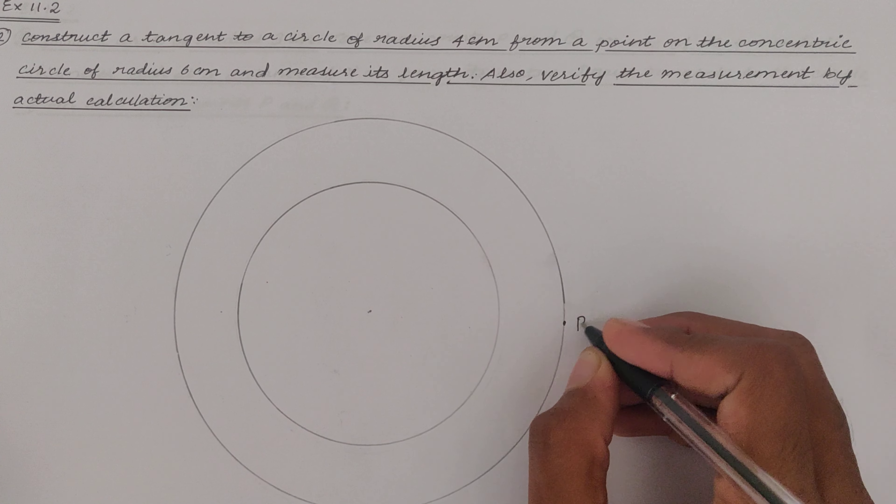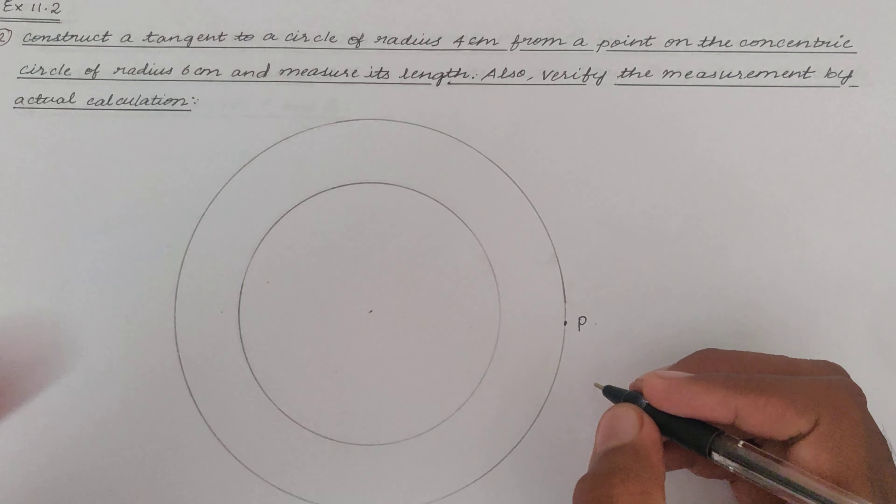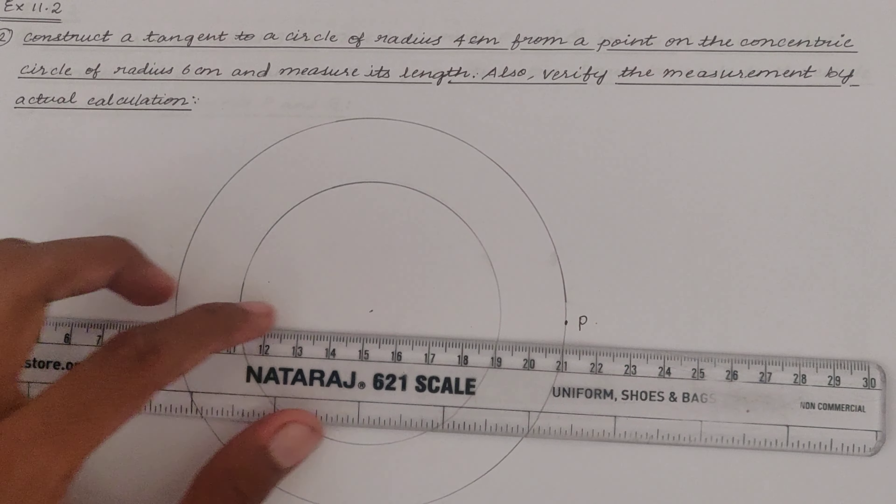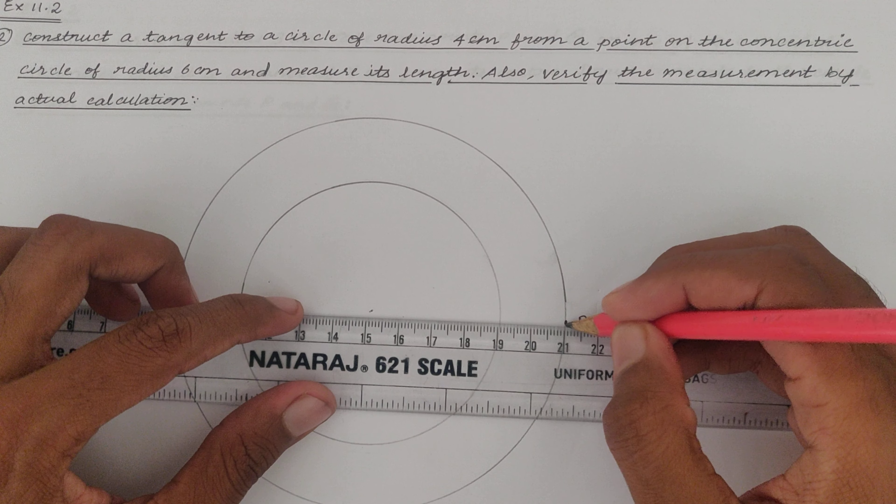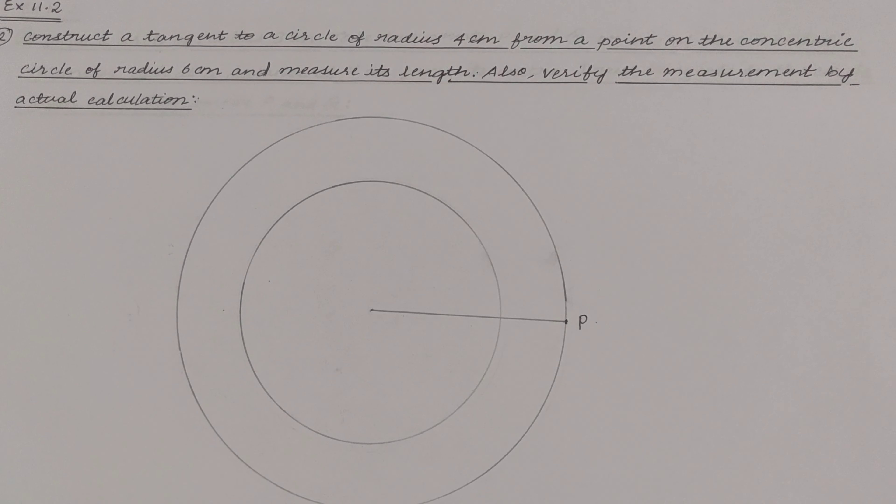Let me take this point as P and from here we have to draw two tangents to the inner circle. So how do we do this? First what we have to do is we have to join this point to the center of the two circles.